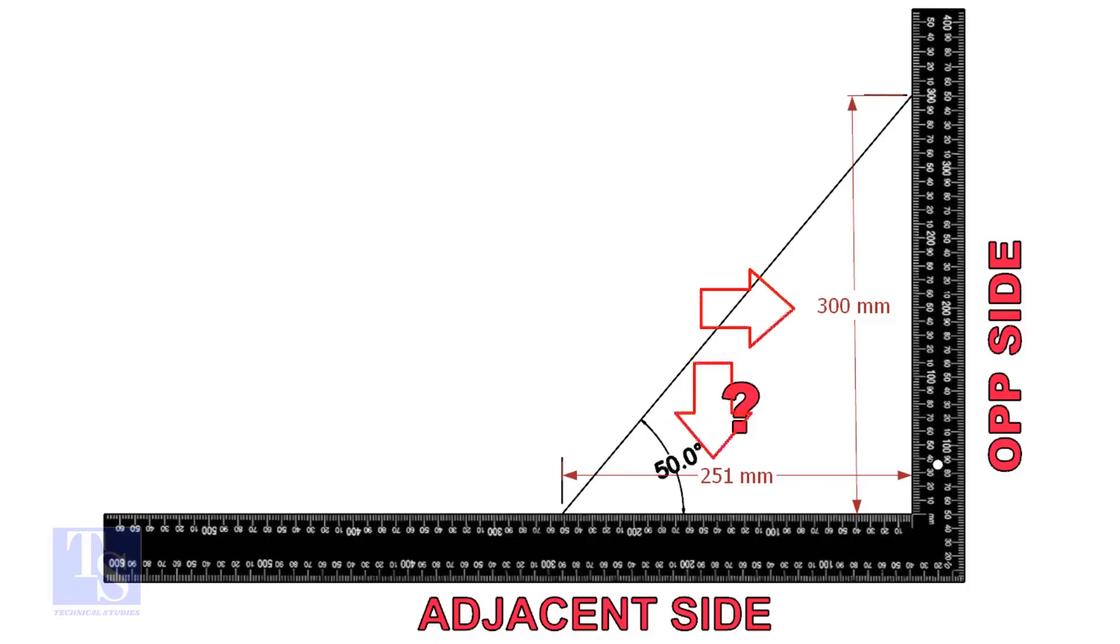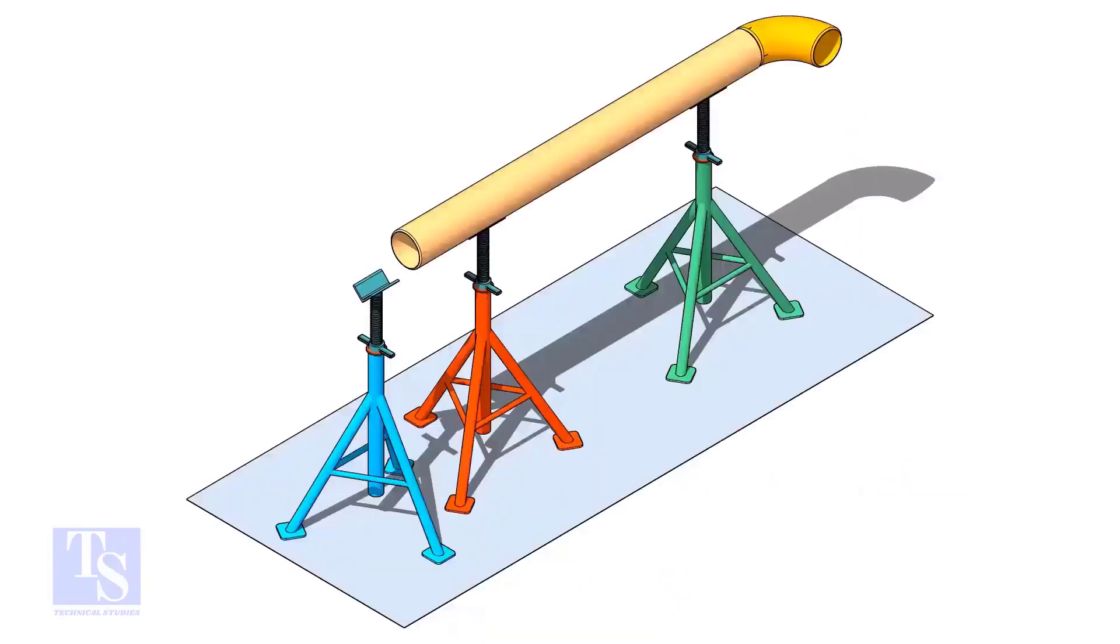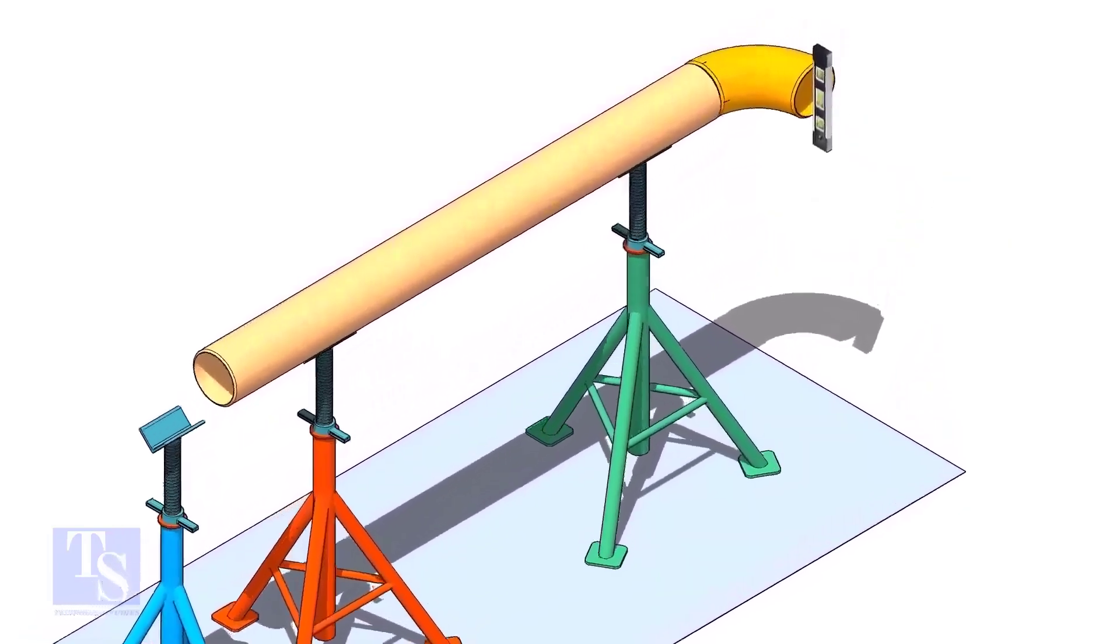Mark these dimensions on a large right angle as shown. Level the pipe and the elbow that is already fitted on the pipe.